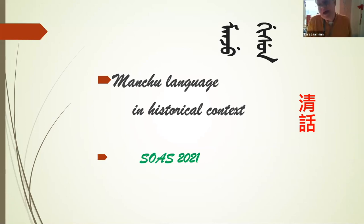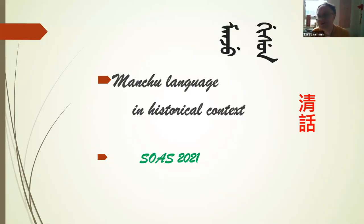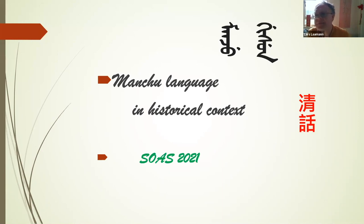On this large screen, you have your first Manchu word, namely 'Gizun,' which means 'tongue,' so it's the language — 'lingua' in Latin. It's a term that you can see here on the right, and that's your first lesson, the first part of the lesson.